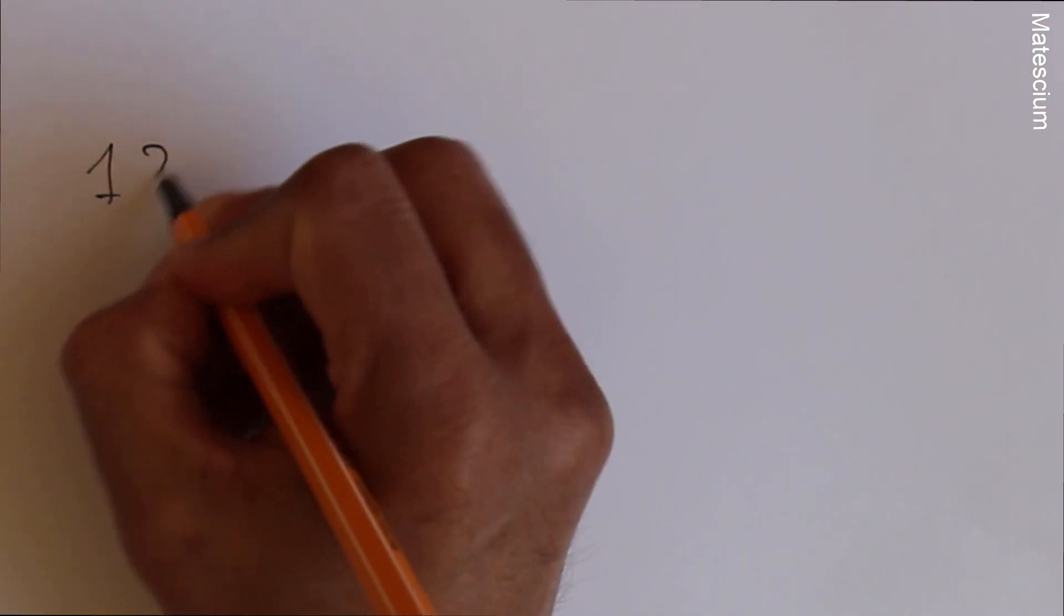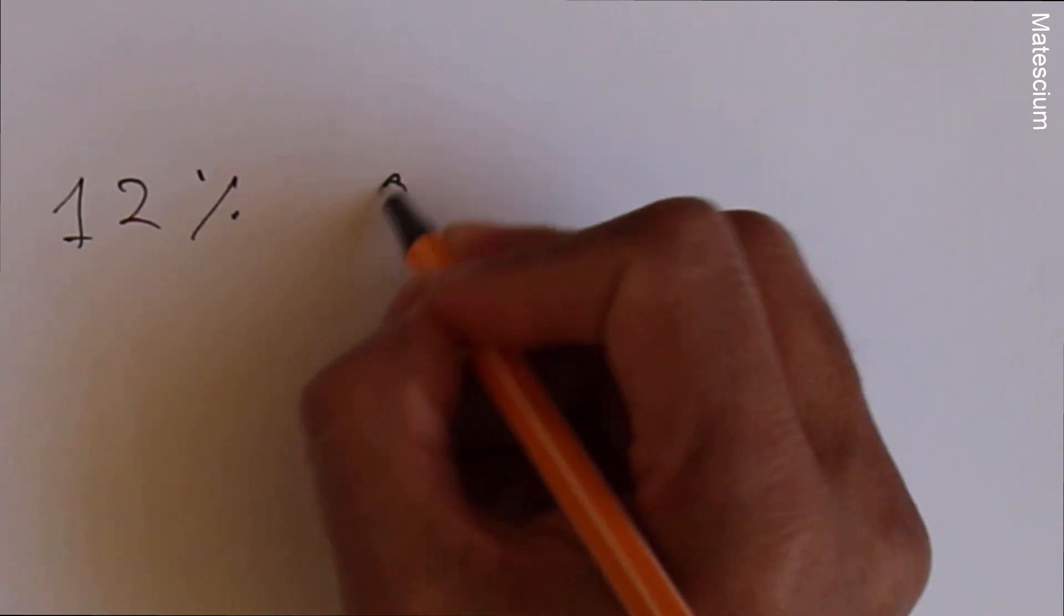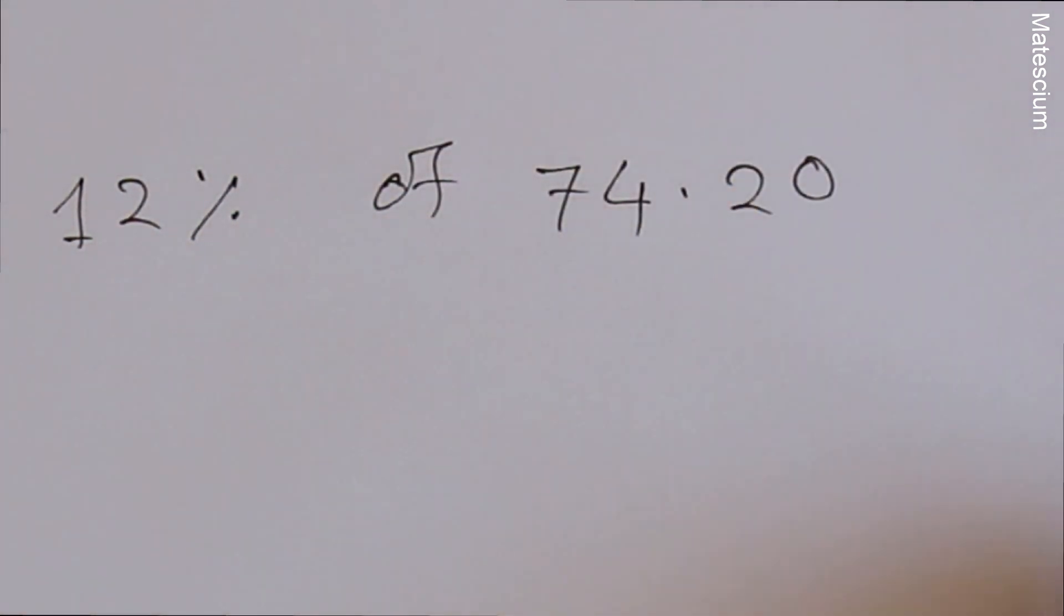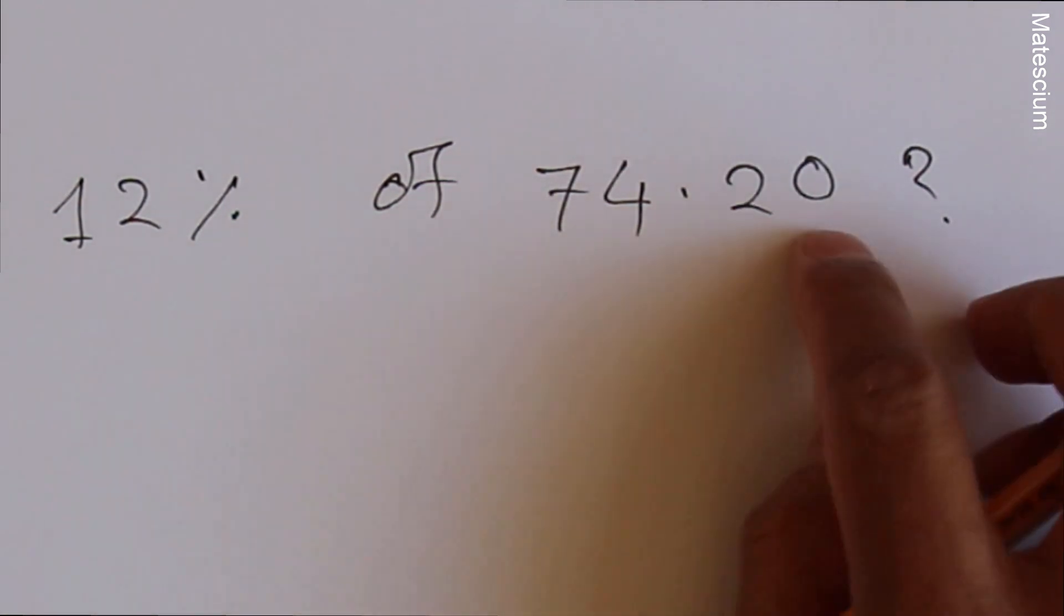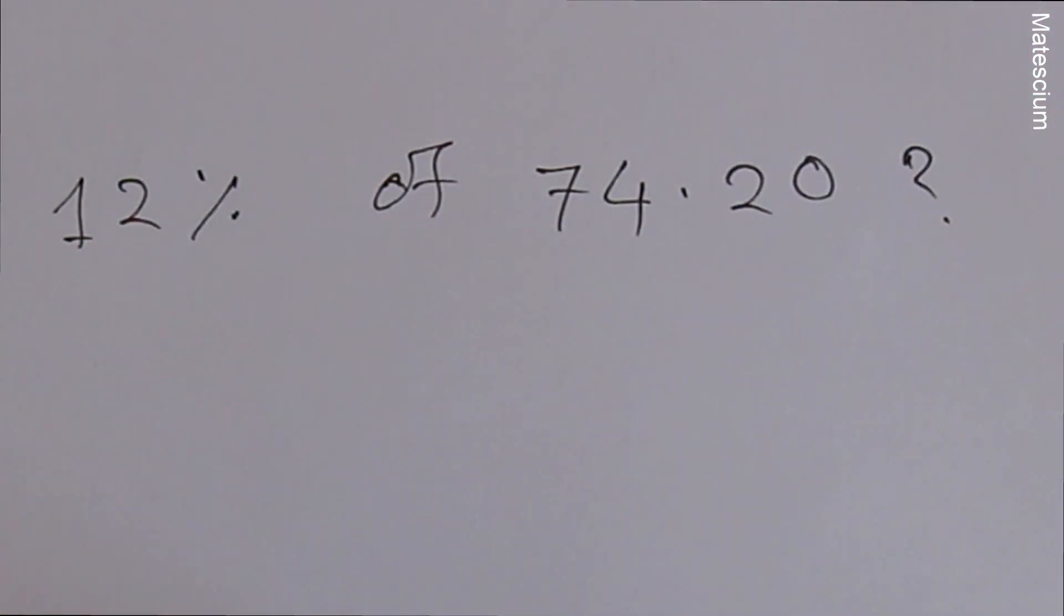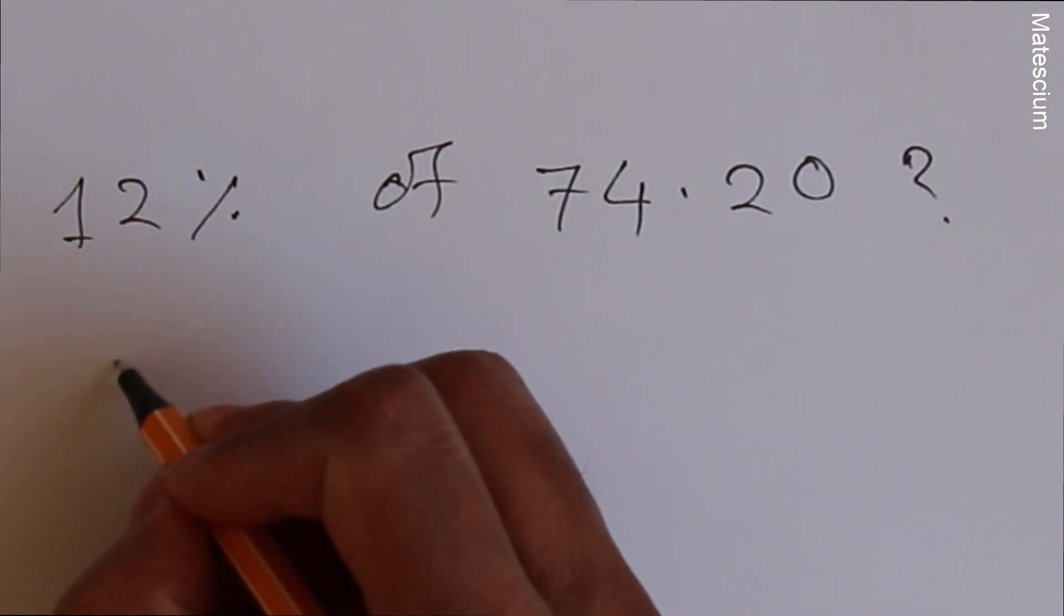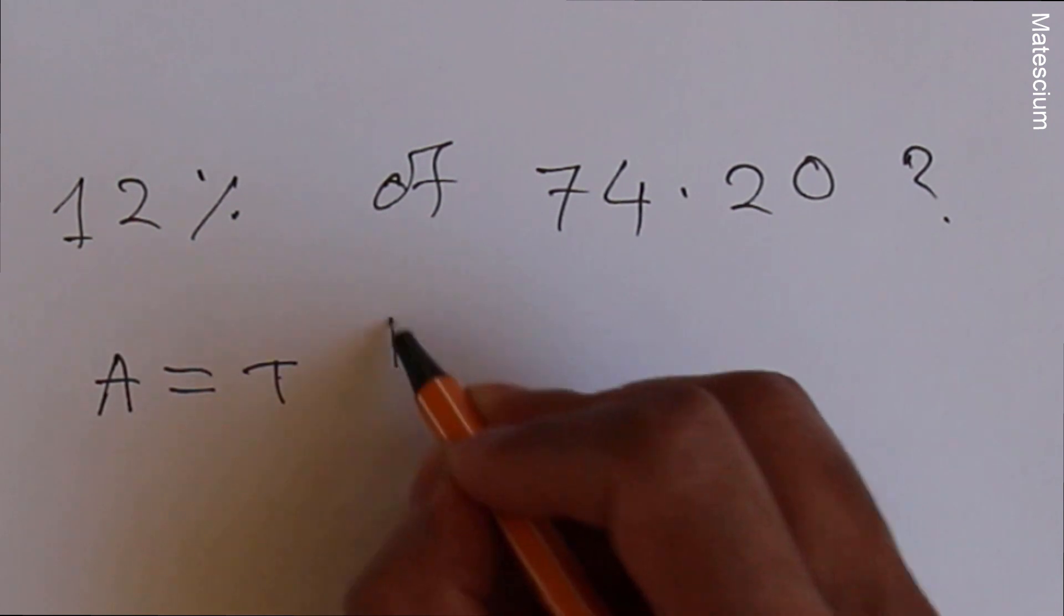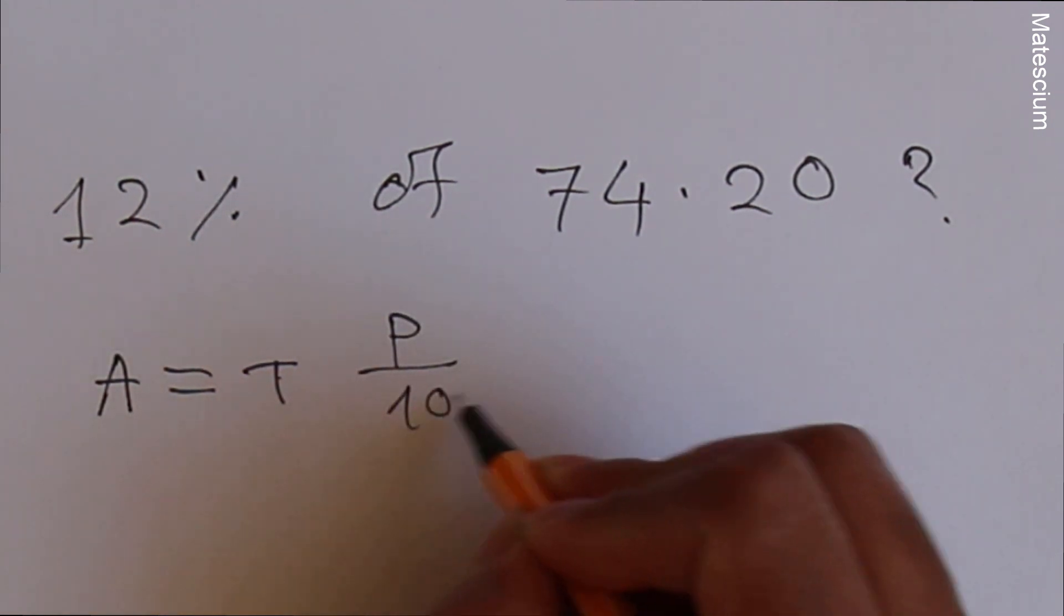Let's say 12% of 74.20. What's the value of 74.20 if I want to eliminate 12%? So what we have to do, I have to apply the same formula, ATP formula. A equals T times P over 100, right?